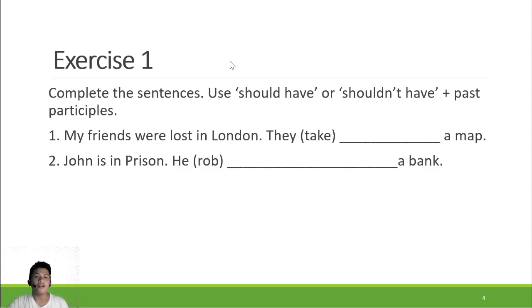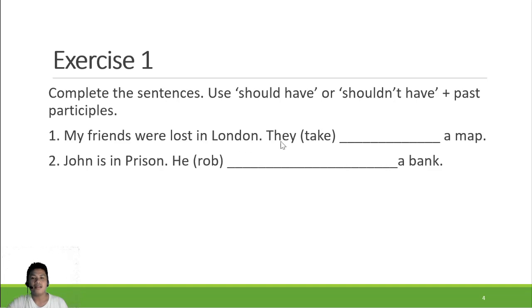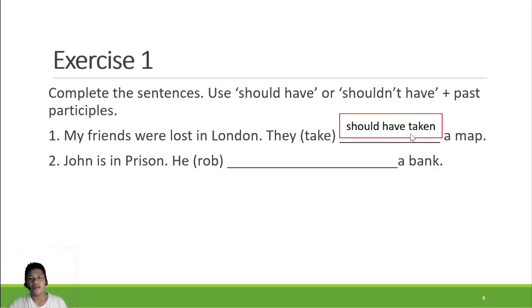After learning the use of 'should have' and 'shouldn't have,' let's work on Exercise One. Complete the sentences using 'should have' or 'shouldn't have' plus past participle. Number one: 'My friends were lost in London — they ___ take a map.' The answer is: they should have taken a map.